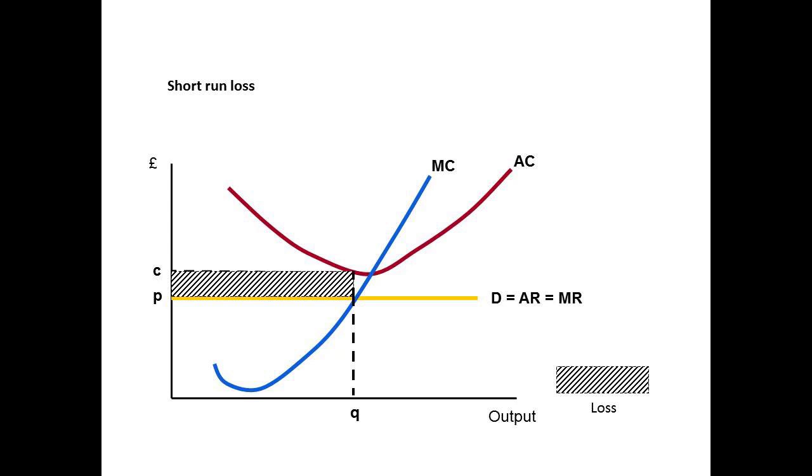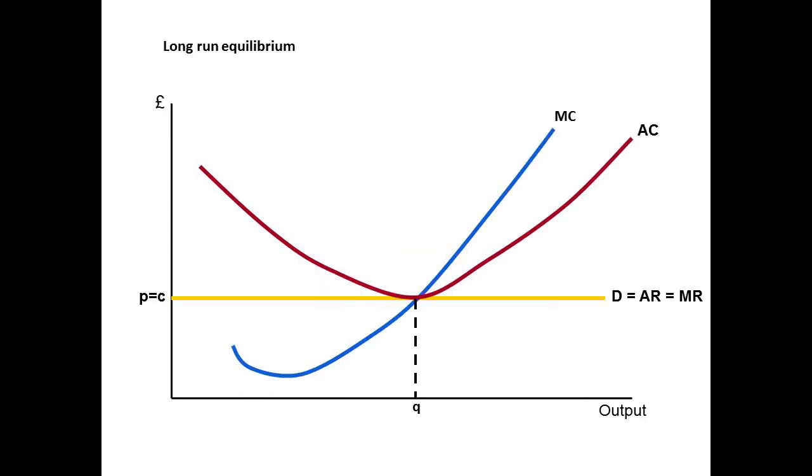Instead, in the long run, a firm under perfect competition is going to make a normal profit, as shown by this diagram here, where price and cost are the same.